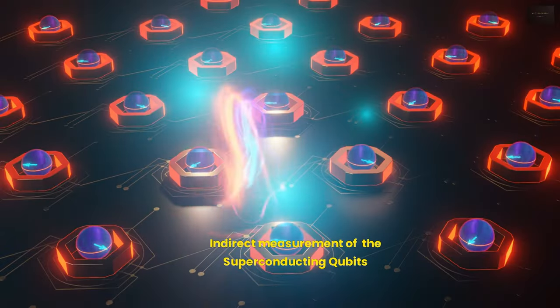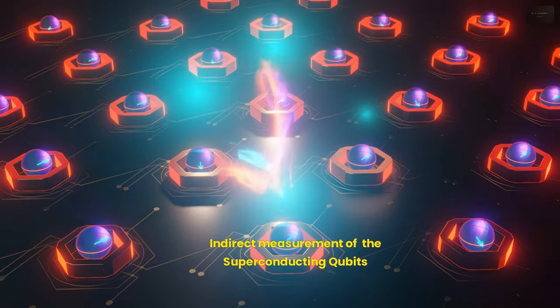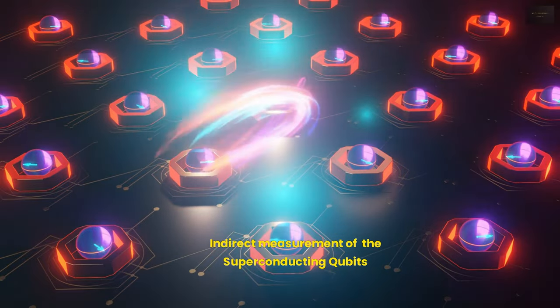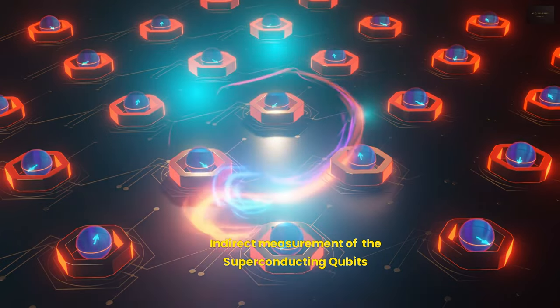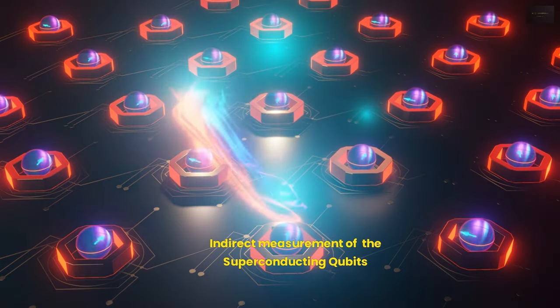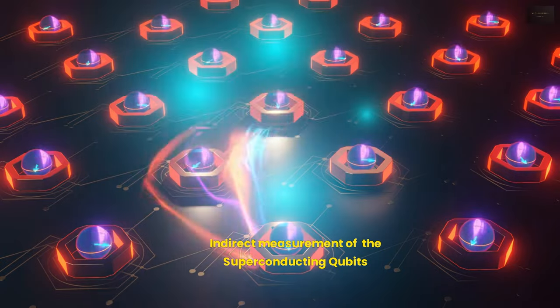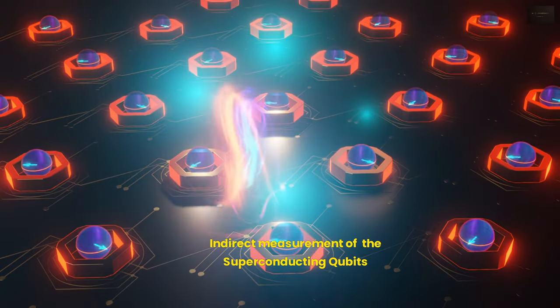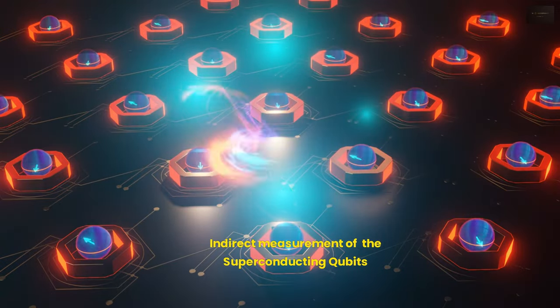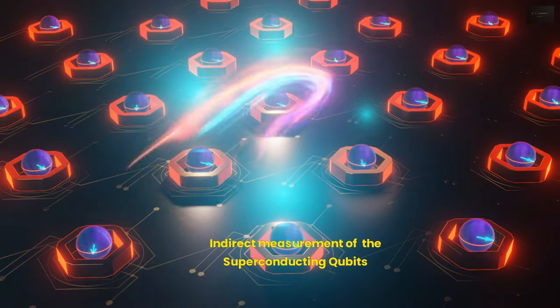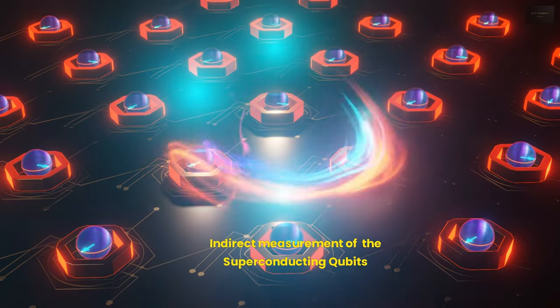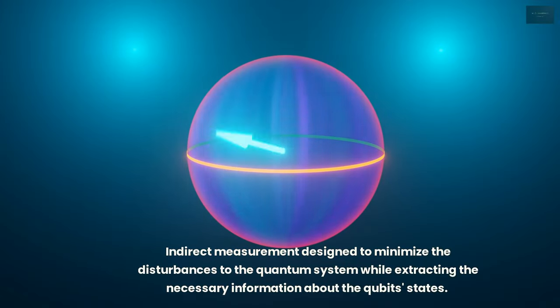Next is indirect measurement of the superconducting qubits, such as Google's system. Superconducting qubits are tiny circuits made from superconducting materials. These circuits can carry an electrical current without resistance, allowing them to maintain their quantum states for longer periods. The state of a superconducting qubit is typically measured using a device called a Josephson junction. When combined with microwave pulses, this junction can probe the qubit's state without directly interacting with it. The process involves sending a microwave pulse to the qubit and then measuring the reflected pulse. The state of the qubit affects the properties of the reflected pulse, allowing its state to be determined indirectly. Both these methods are designed to minimize the disturbances to the quantum system while extracting the necessary information about the qubit states. However, it's worth noting that no measurement can be entirely non-intrusive in the quantum realm, but these techniques come close by minimizing the impact of the measurement process on the quantum system.